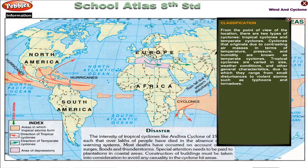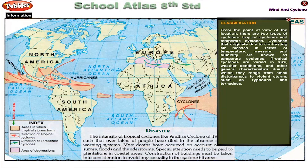Classification. From the point of view of location, there are two types of cyclones: tropical cyclones and temperate cyclones. Cyclones that originate due to contrasting air masses in terms of temperature, pressure and humidity are known as temperate cyclones. Tropical cyclones are varied in size, weather conditions and other general characteristics, due to which they range from small disturbances to violent storms such as typhoons and tornadoes.